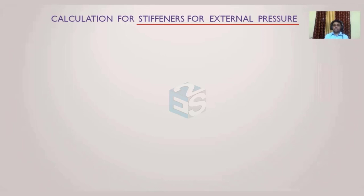While designing the cylindrical shells and conical shells under external pressure, we come to know that we can use stiffener rings to reduce the length, and that L/Do and Do/t ratio further increases the allowable pressure. So by using these stiffener rings as a line of support, we can increase the allowable pressure for that particular cylinder.